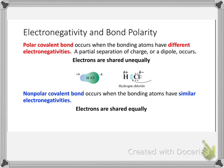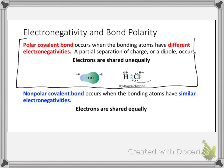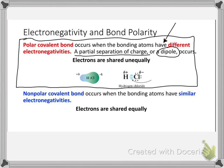Let's see how we can apply electronegativity to the idea of that intermediate bond type — the polar covalent bond, which sits between ionic and purely covalent. A polar covalent bond occurs when two atoms have different electronegativities. The element with higher electronegativity will attract the electron cloud from the shared electrons toward itself. That creates a partial separation of charge called a dipole. Let's look at the example of HCl.